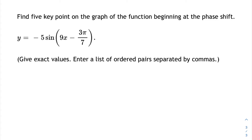Find 5 key points of the graph of the function beginning at the phase shift. What we have here is y equals negative 5 sine of 9x minus 3pi over 7. To find the 5 key points, we have to remember what they are.